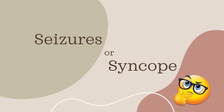During assessment of these patients, an eyewitness's account is extremely valuable. A witness may tell you about jerky movements during the event. It should be noted, however, that some patients with syncope may actually have brief stiffening and limb twitching during the episode, which would need differentiation from seizure-like movements.